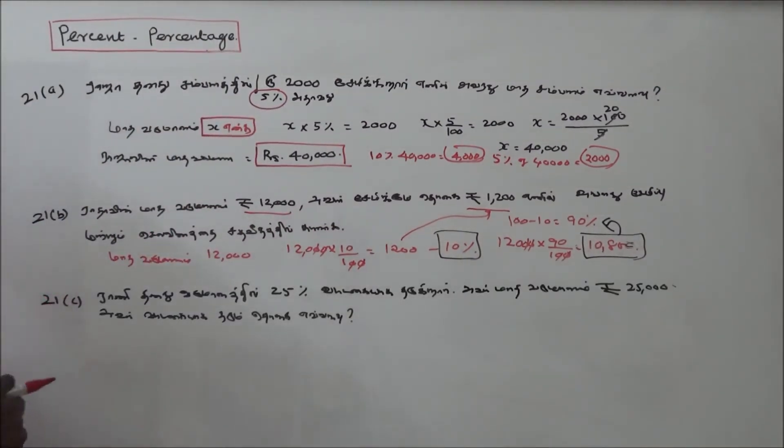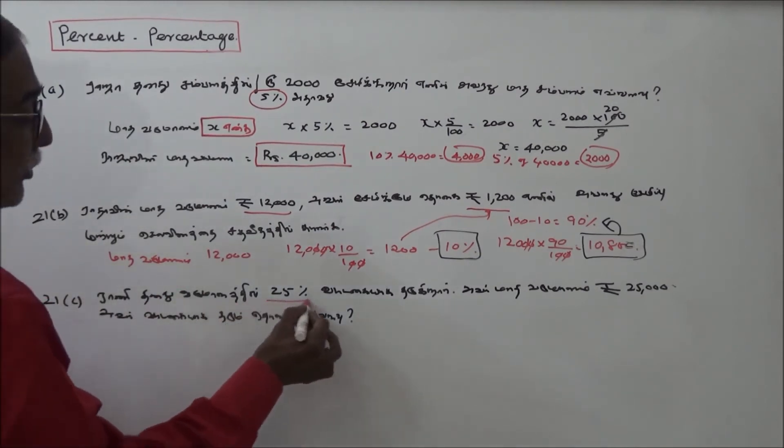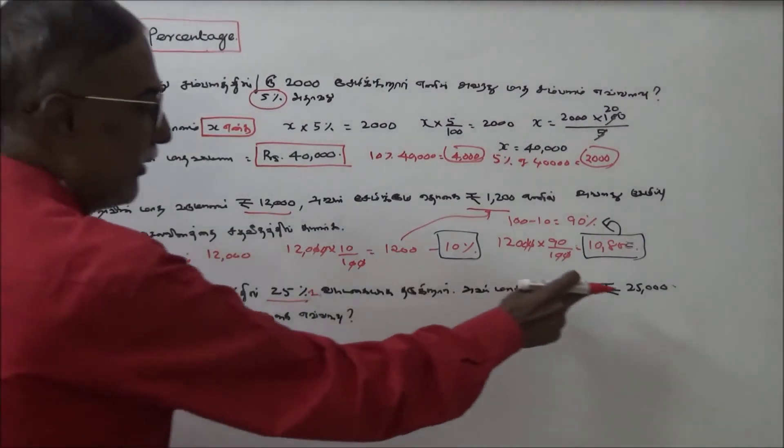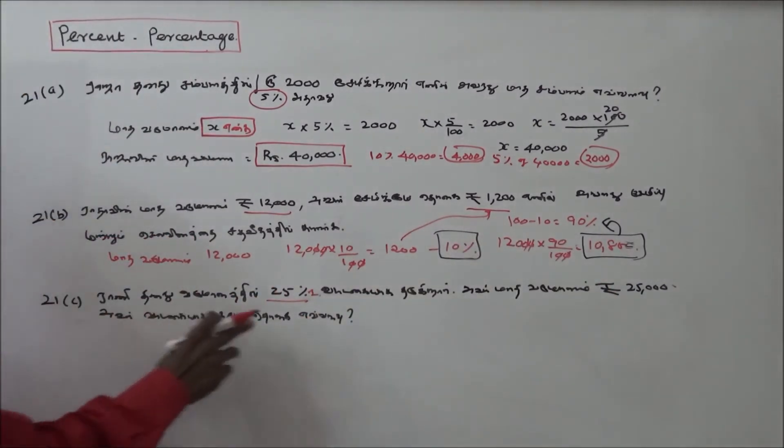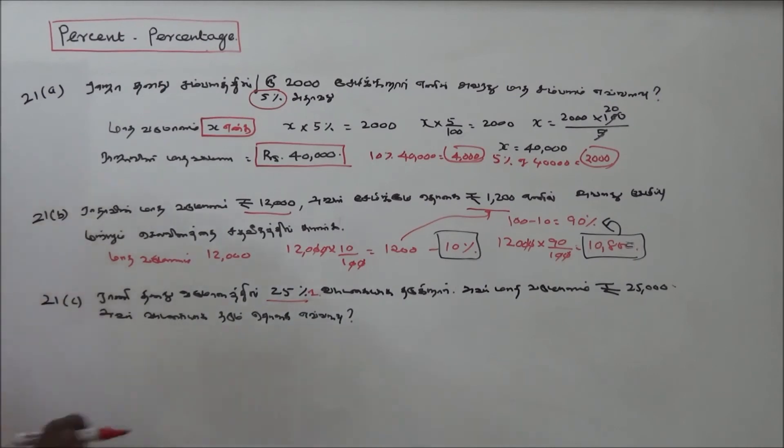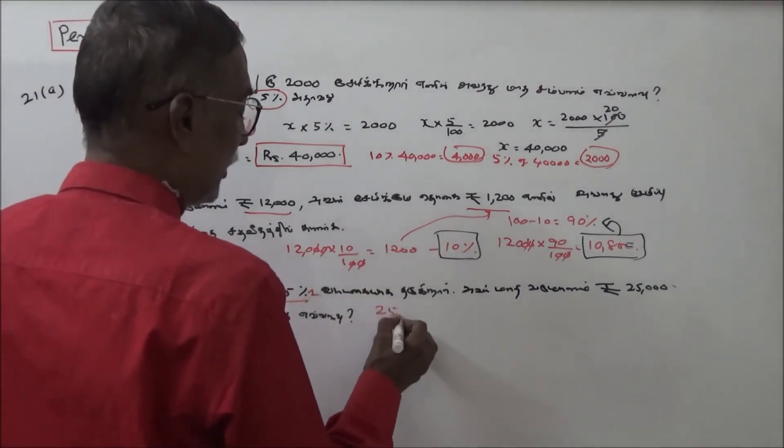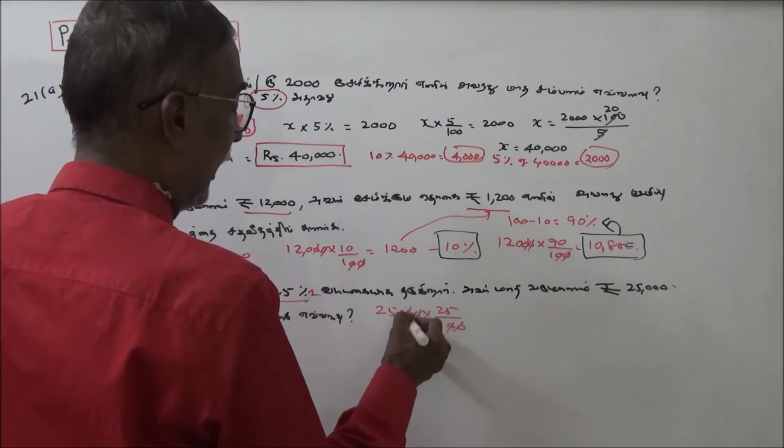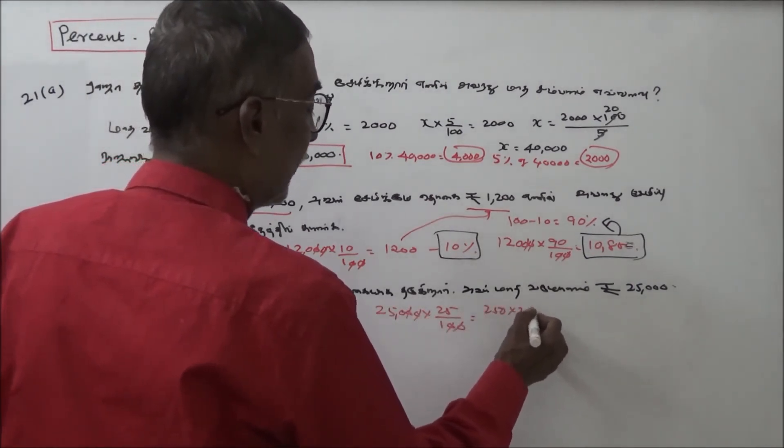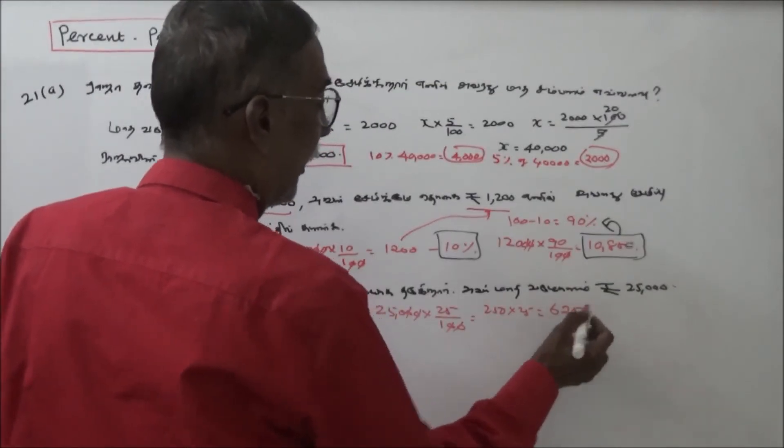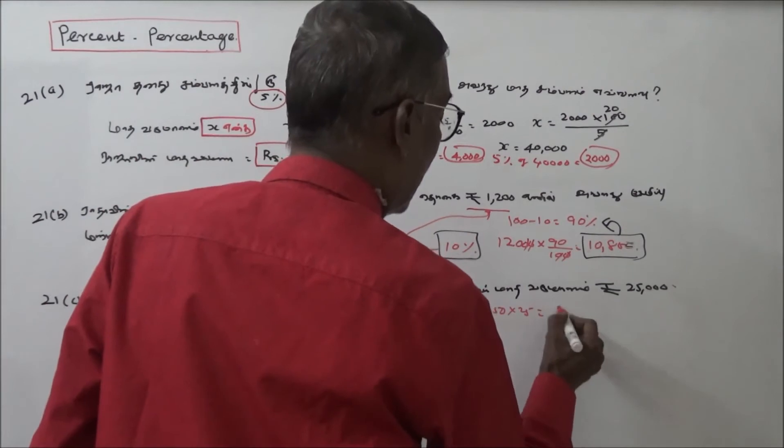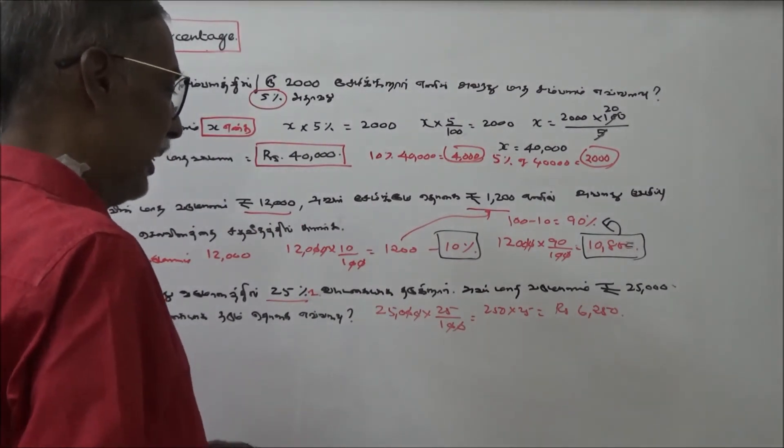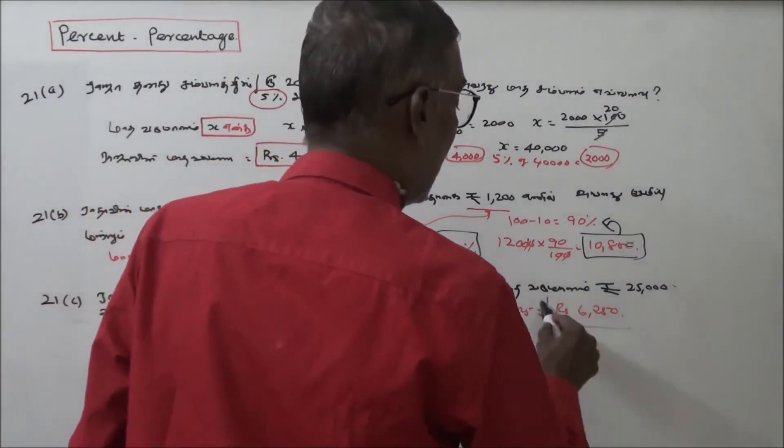Problem 21c: 25% of the monthly income. Monthly income is 25,000. Calculate 25,000 into 25 by 100 to get the rent amount of 6,250 rupees.